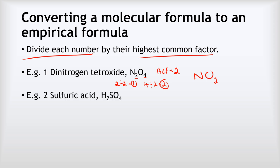Sulfuric acid is H2SO4. Start by finding the highest common factor. The numbers are 2, 1, and 4. The highest common factor of all those numbers is 1. When your highest common factor is 1, your molecular and empirical formulas will always be the same. So our empirical formula here will also be H2SO4.